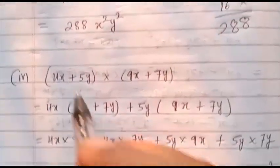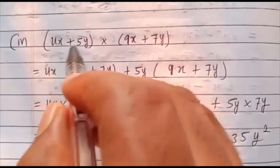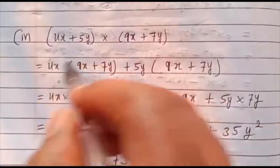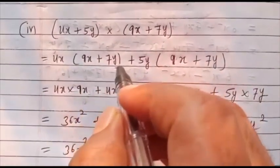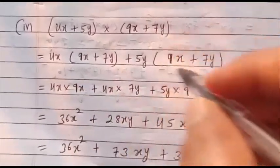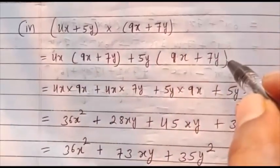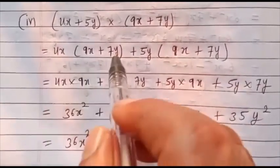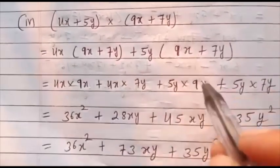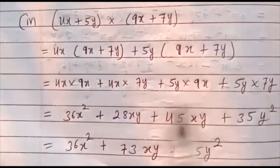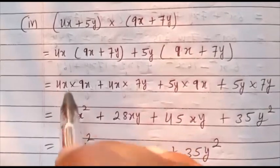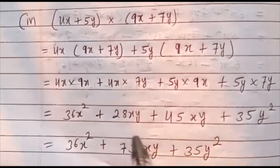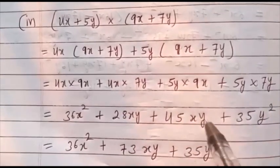Now question number 4: (4x plus 5y) into (9x plus 7y). First write 4x times the whole bracket (9x plus 7y), plus 5y times the whole bracket (9x plus 7y). Multiply: 4x into 9x gives 36x², 4x into 7y gives 28xy, 5y into 9x gives 45xy.